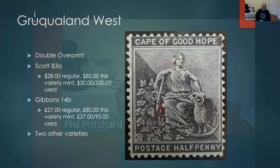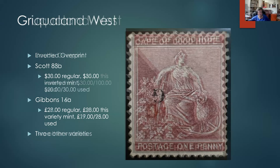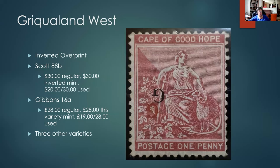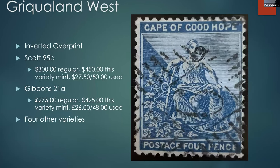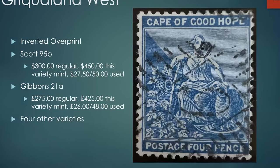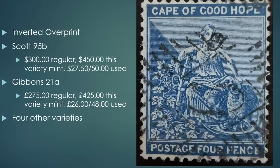Are there forgeries of these overprints? Yes, definitely — you can easily make a forgery by using a capital 'G' in some typeface close to the original. Here's Griqualand MS 88b — in this case an inverted rather than double overprint. There are three other varieties of this particular stamp. This is an inverted one — the 'G' is up here, a metallic 'G' rather than a straight 'G'.